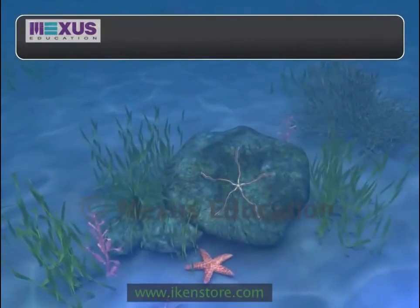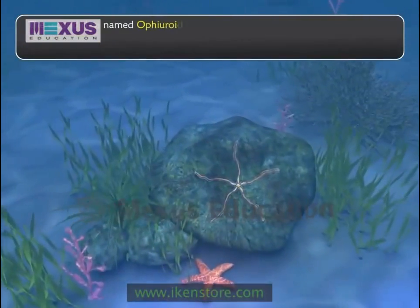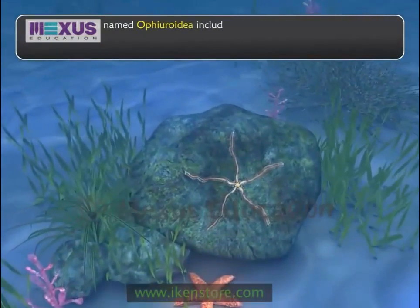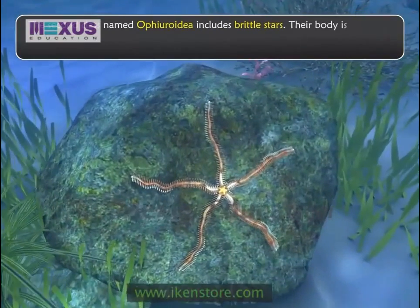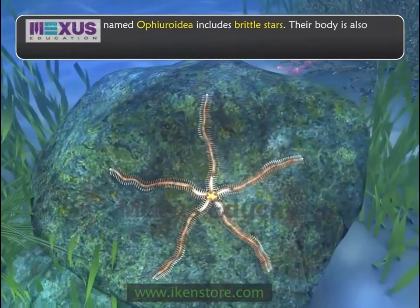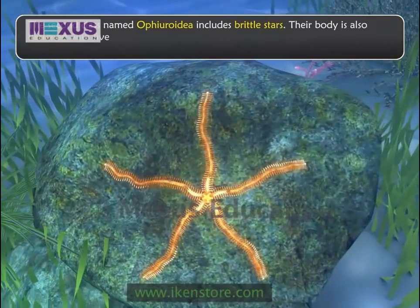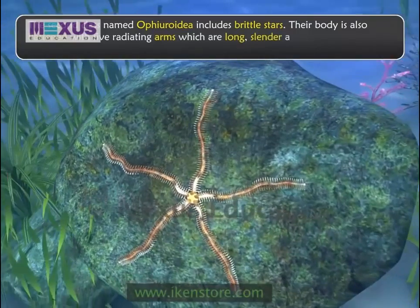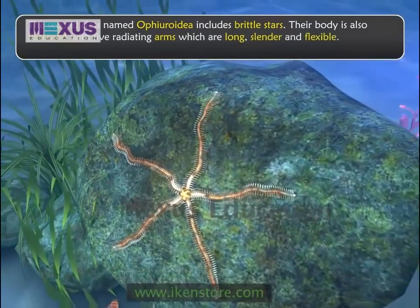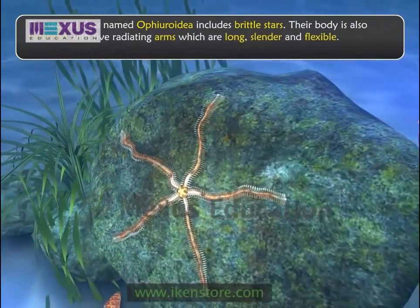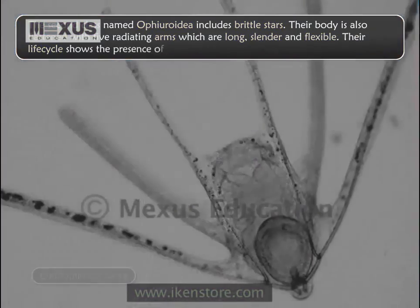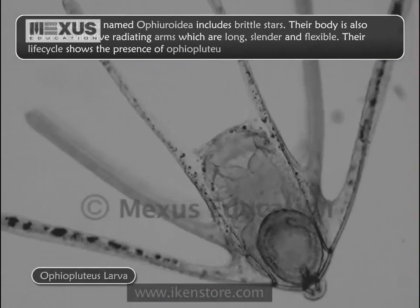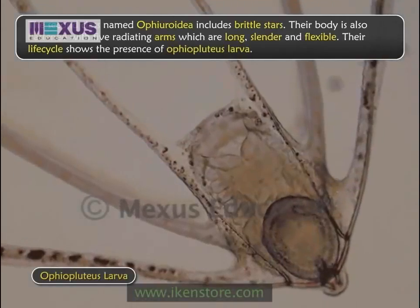The second class, Ophiroidea, includes brittle stars. Their body is also flattened with five radiating arms, which are long, slender, and flexible. Their life cycle shows the presence of Ophiopluteus larva.